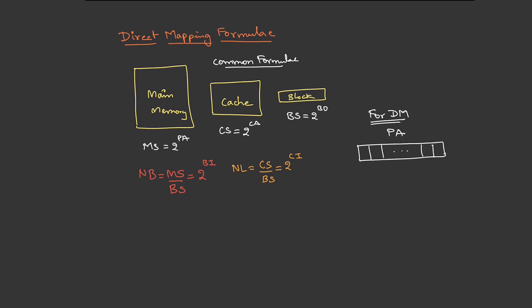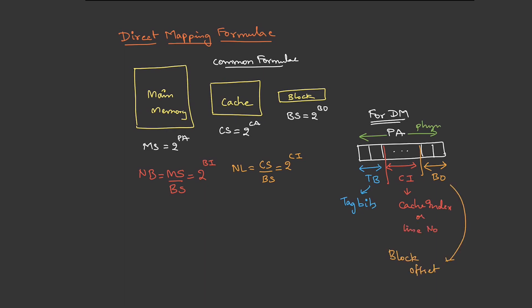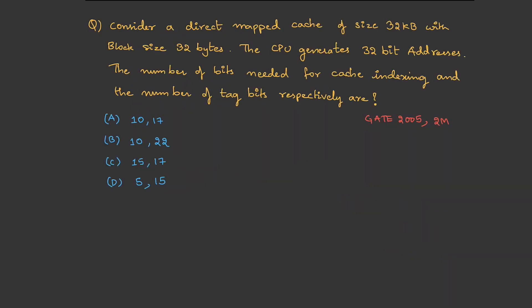For direct mapping, when we know the physical address: the first few bits are block offset, the next few bits are cache index or the line number, and the rest of the bits are tag bits. These are important — make a note of this in your book.